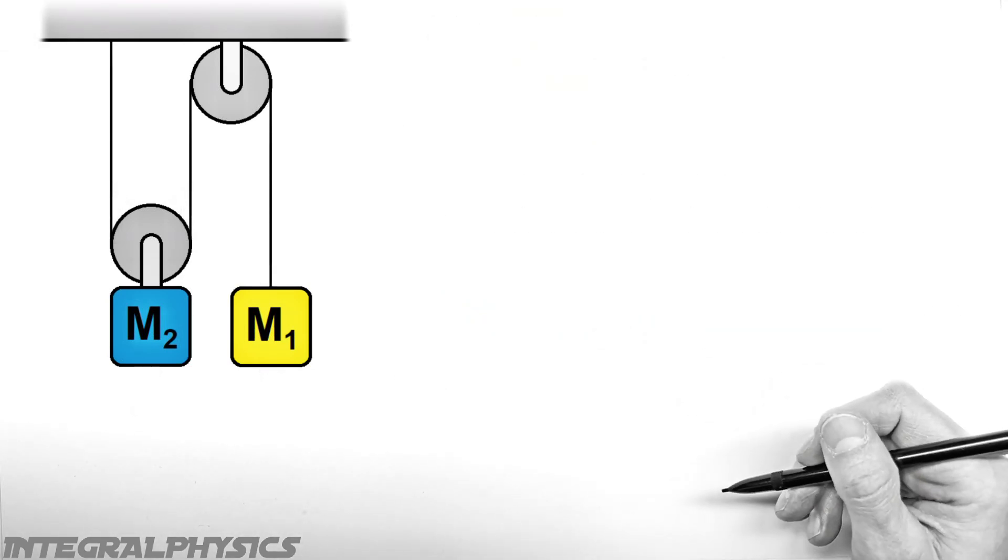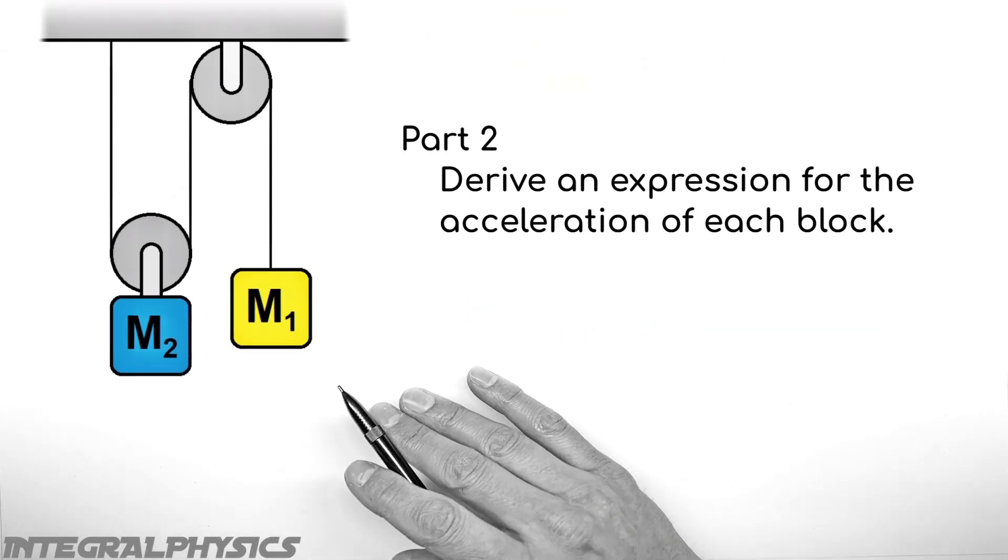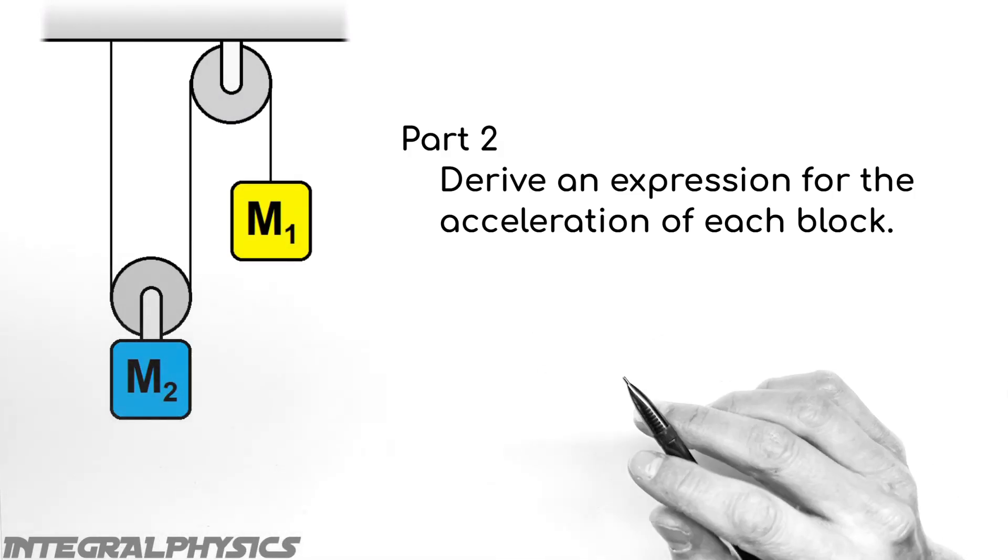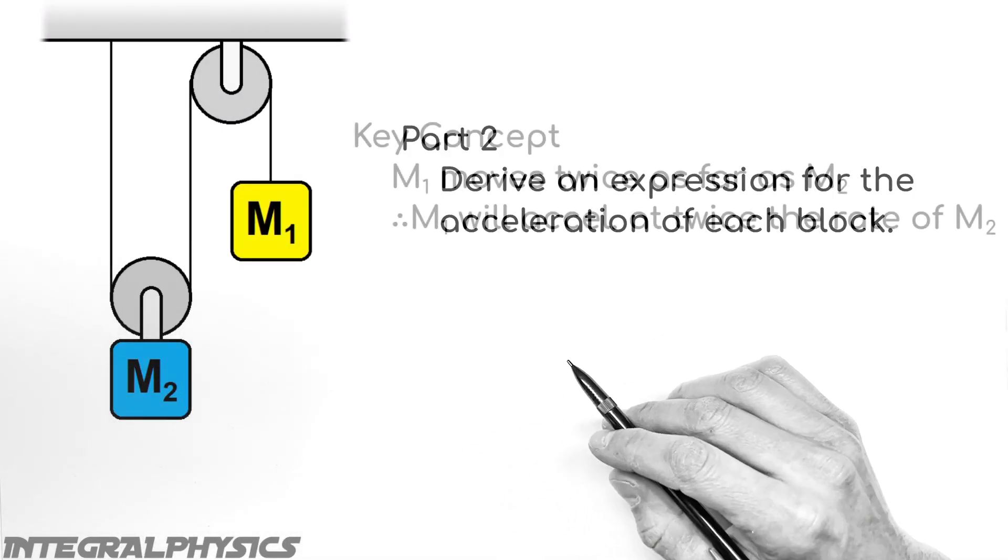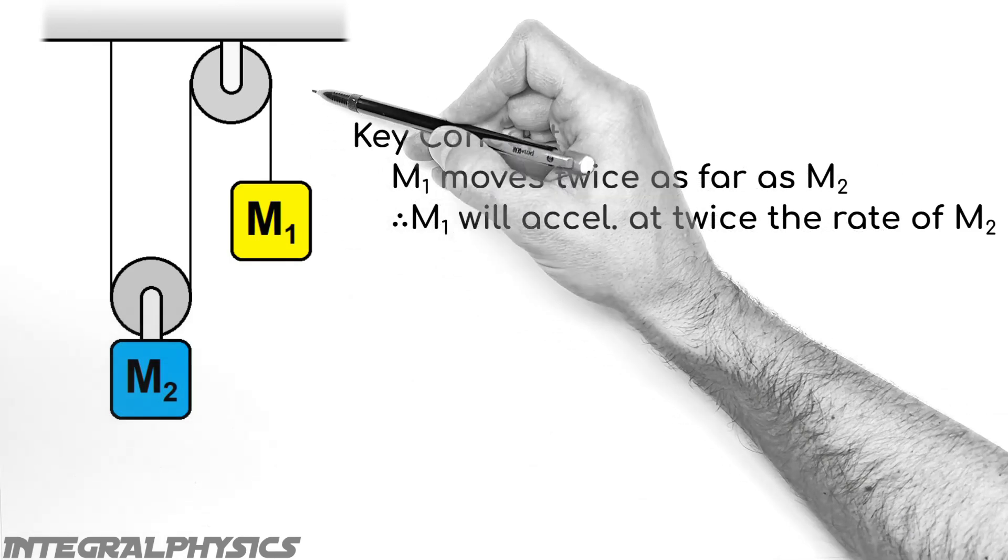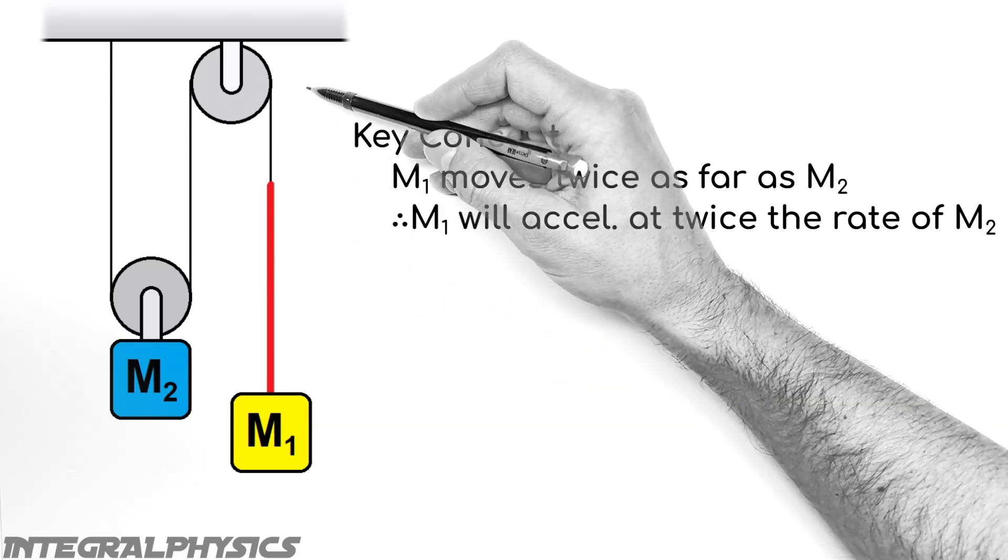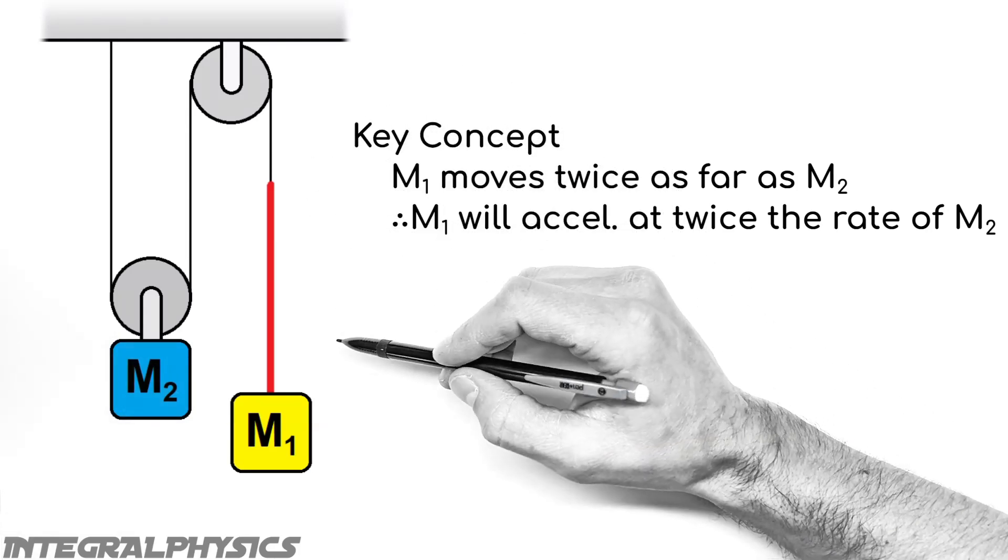Now moving on to the second part of this problem, I want to derive an expression for the acceleration of these two blocks when they're not in equilibrium. And again, there's a key idea that we have to wrap our heads around here. You see, if this block right here was to move down, let's say some distance, how about one meter?